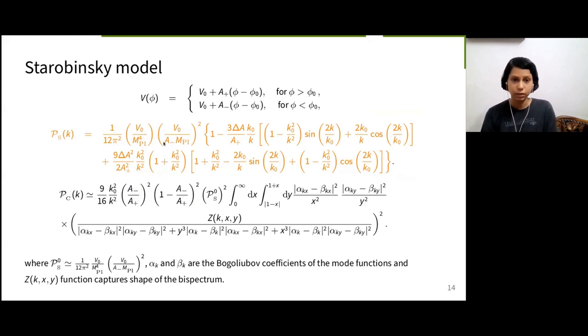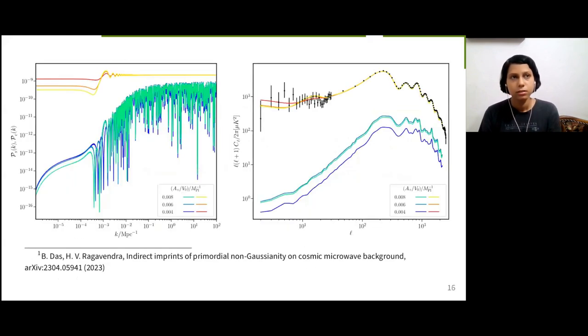We have four parameters here for the model: V0, A plus by V0, A minus by V0, and K0. Out of this, we shall not vary V0 and A minus by V0 as they determine the amplitude of PS, which is already constrained. We shall only vary A plus by V0 and K0. Just like in previous case, we have power spectrum in the left panel and corresponding angular power spectrum on the right for the variation of these two parameters.